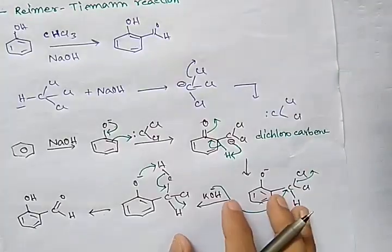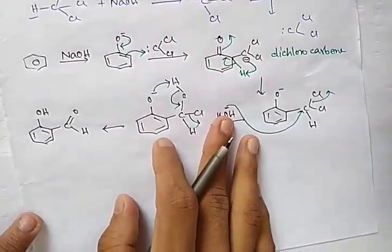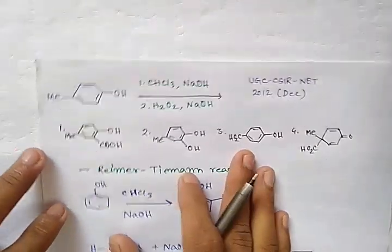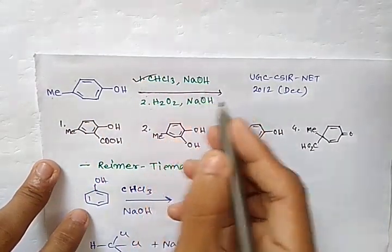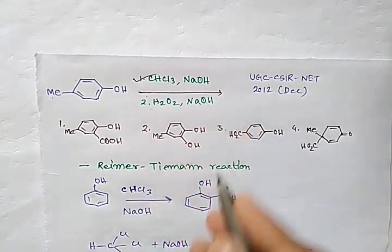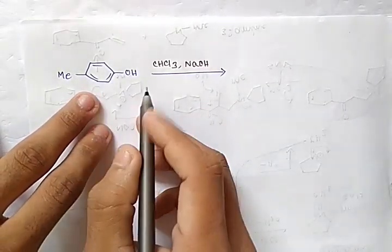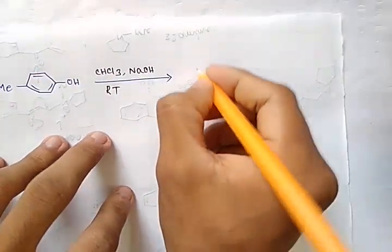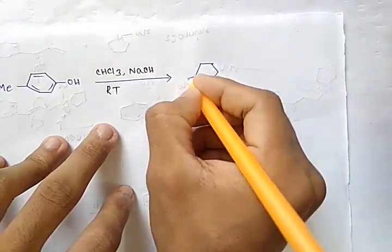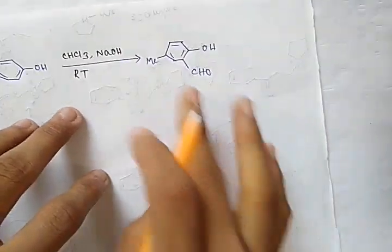So the Reimer-Tiemann reaction is the conversion of phenol to salicylaldehyde after treatment with chloroform and any base. Now applying this to our problem: when para-cresol is treated with Reimer-Tiemann reagents, it forms a product with a methyl group and an aldehyde group at the ortho position.